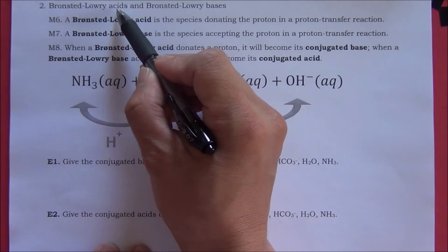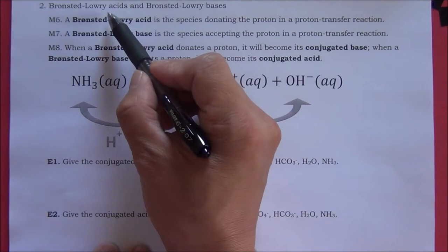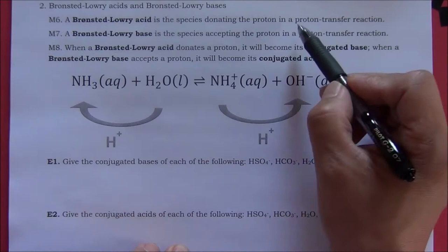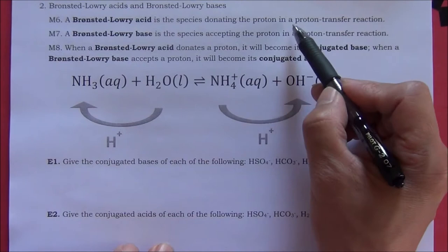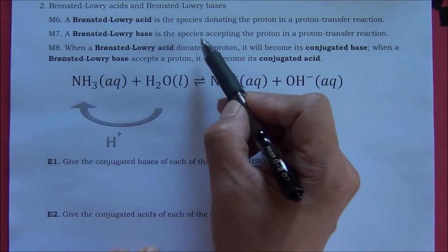Brønsted and Lowry define acids and bases in a different way. They do not need to use water to define acids and bases. Instead, they use a proton transfer reaction. A Brønsted-Lowry acid is a species donating the proton in a proton transfer reaction. A Brønsted-Lowry base is a species accepting the proton in a proton transfer reaction.